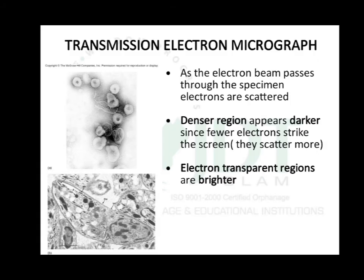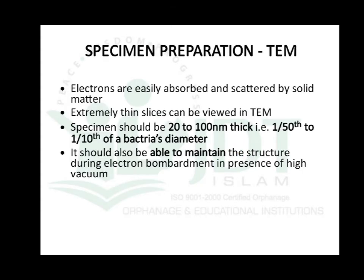In TEM observation, as the electron beam passes through the specimen, electrons are scattered. Denser regions appear darker because fewer electrons strike the screen — most electrons are absorbed by the denser region of the cell. The lighter, transparent region of the cell appears brighter. So brighter regions are transparent and darker regions are denser.